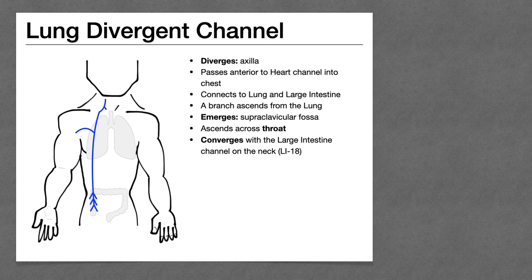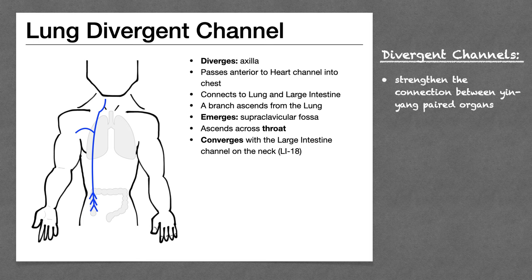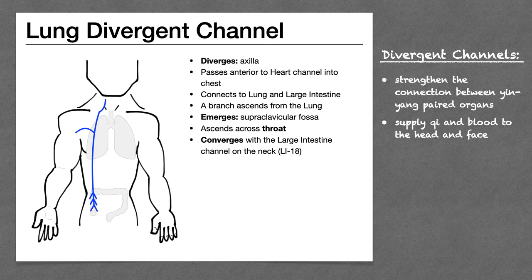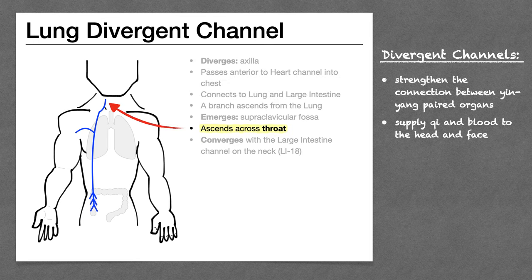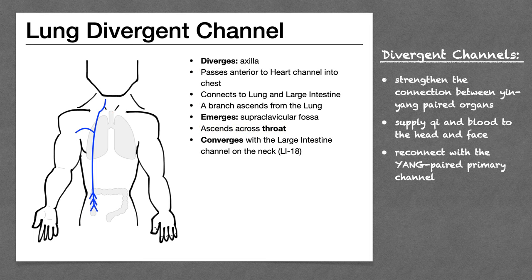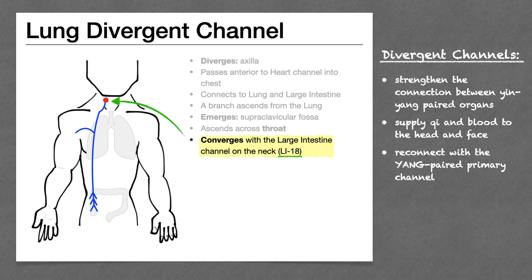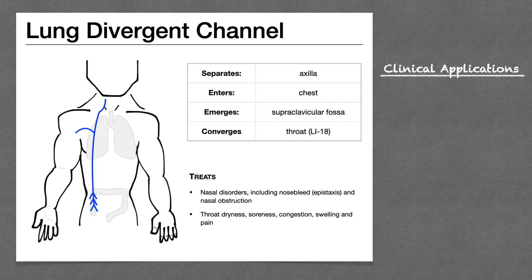Next we have the divergent channel. Divergent channels strengthen the connection between yin and yang paired organs, so here we see the divergent channel connecting to the lung and the large intestine. They supply Qi to the head and face — again, we see the lung divergent channel going up to the throat, letting us treat things like sore throat. Divergent channels reconnect to their yang paired primary channels; here, the lung divergent channel connects to the large intestine primary channel at LI18, which can help us treat nose problems. Conditions that can be treated through the lung divergent channel include nasal disorders like nosebleed and nasal obstruction, and throat problems.